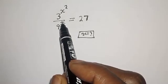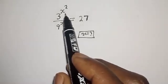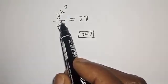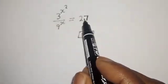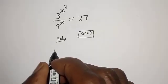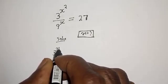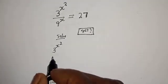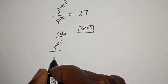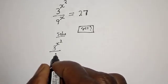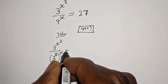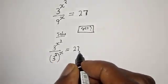Hello, welcome to Math Focus. We want to find the value of s from this equation: 3 raised to power x squared divided by 9 raised to power x is equal to 27. Solution: 3 raised to power x squared divided by 9 raised to power x can be written as 3 squared raised to power x is equal to 27.